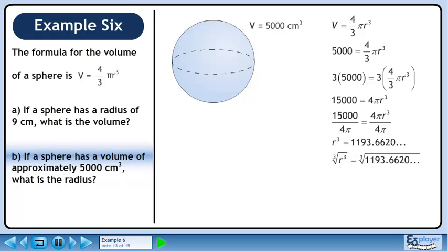Take the cube root of each side to solve for the radius. The radius is 10.6078 continuing. The radius of the sphere is approximately 10.61 centimeters.